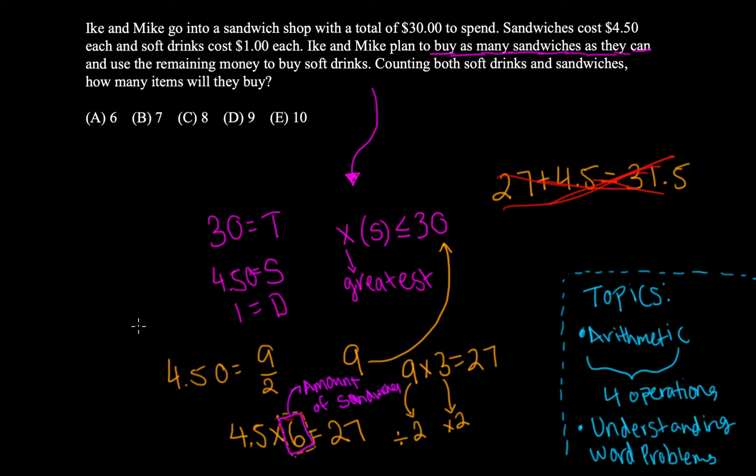And the thing is, with multi-step problems like these, you need to wait and really see what they're asking. And in this case, they're not asking what the amount of sandwiches is. They're asking, counting both soft drinks and sandwiches, how many items will they buy?